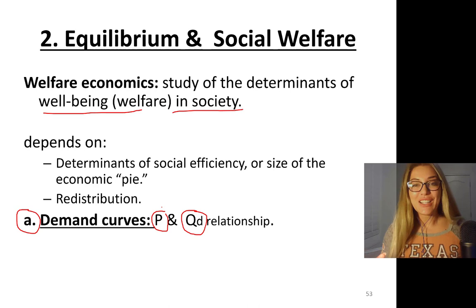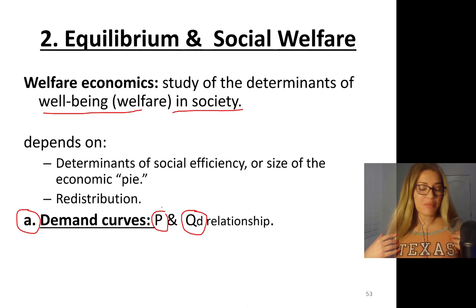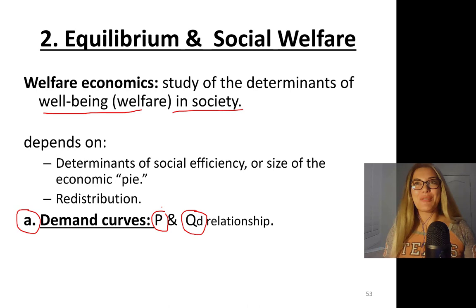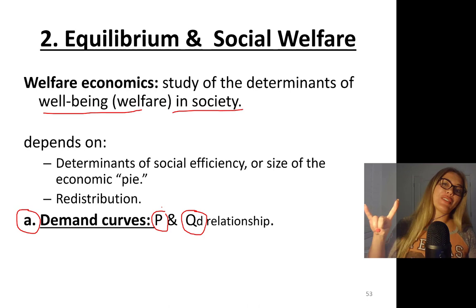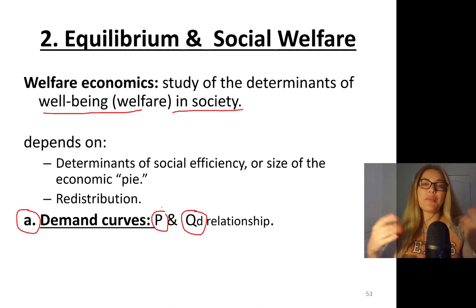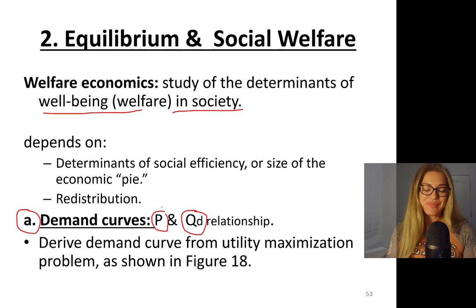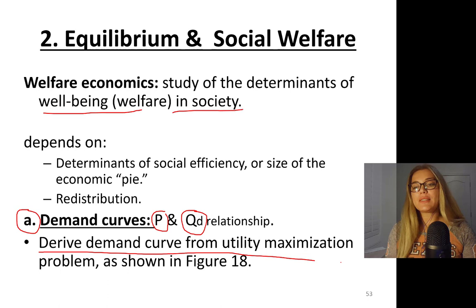As you know, I went to UT Austin, so today I'm wearing my school's jersey. A couple of people were asking me where I got my PhD in economics from — I'm a Longhorn. My subfields are labor economics and also macroeconomics. So what we're going to do is derive the demand curve from the utility maximization problem, as shown in the upcoming figure.